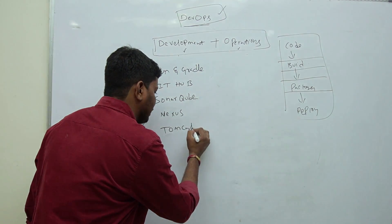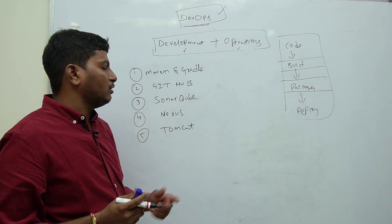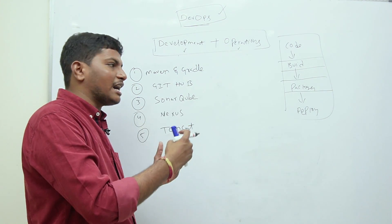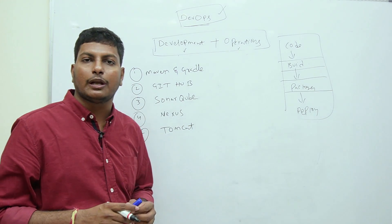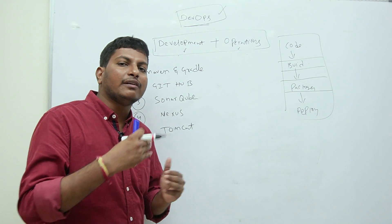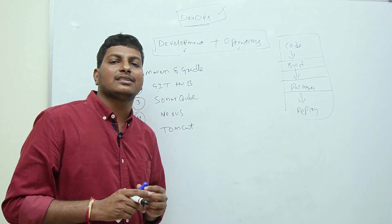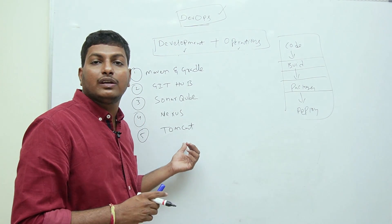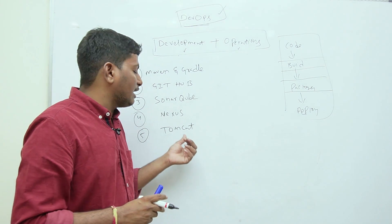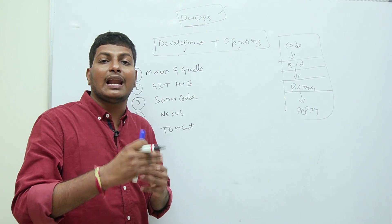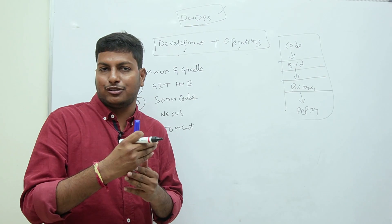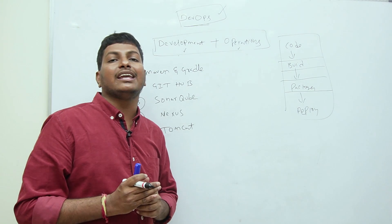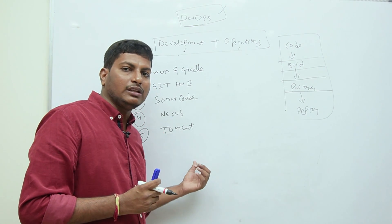Next is Tomcat — one of the most famous web servers used to run Java-based applications. If your project uses Java, we use Tomcat server to deploy. There are other servers as well — for .NET applications, IIS server is used. The servers change based on the language used to develop the project. We need to know how to work with servers to deploy our project.